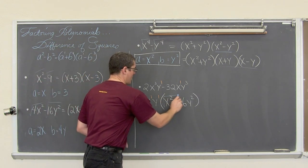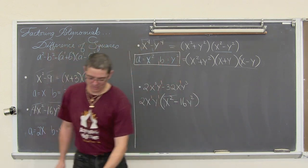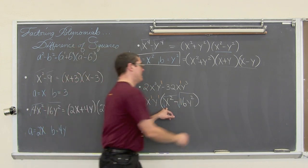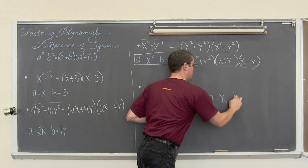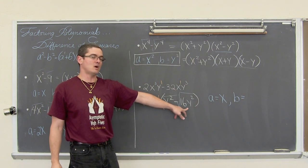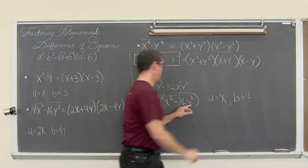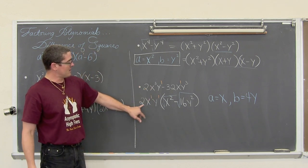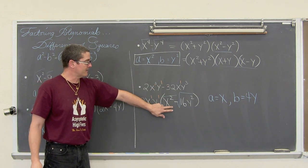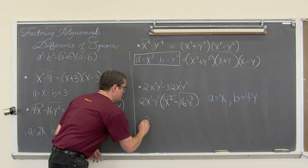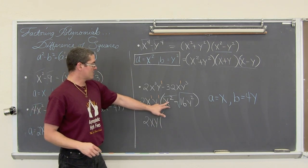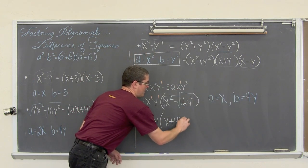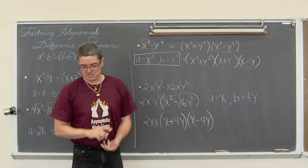So we are going to square root the first term and the last term, and identify a as being equal to x and b as being the square root of 16y squared. The square root of 16 is 4 and the square root of y squared is y, so b is 4y. My final answer is going to be 2xy times x plus 4y times x minus 4y.